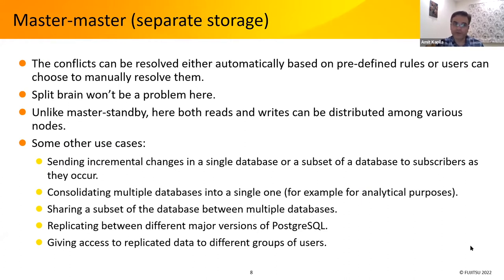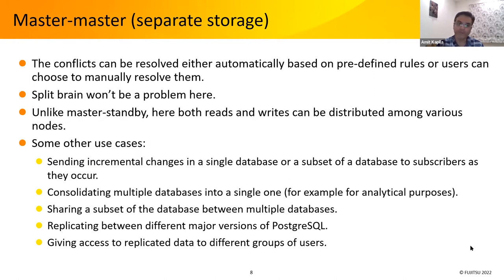For such solutions, we need to see how to resolve conflicts. Normally, conflicts can be resolved either automatically based on predefined rules, or users can choose to manually resolve them. For example, for a primary key violation, the user can manually try to delete the conflicting row from the node. Here, split brain won't be a problem because from the very beginning all the nodes act as masters. Unlike master-standby, here both reads and writes can be distributed.